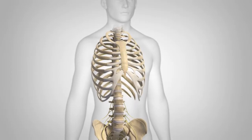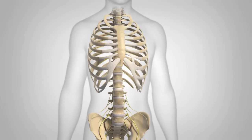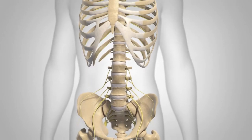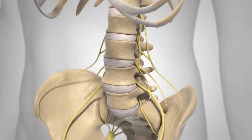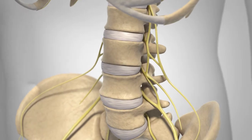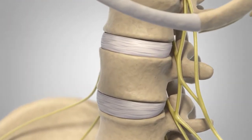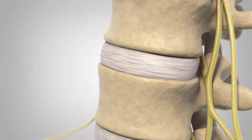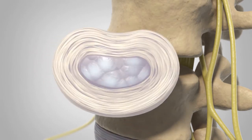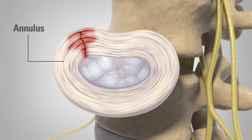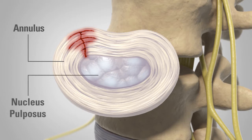Lumbar degenerative disc disease, or DDD, is defined simply as the wear and tear of intervertebral discs that act as cushions for the spine. This wear and tear may result from normal aging, or may be due to long-standing trauma. DDD typically begins with tears in the outer ring of the disc, or annulus, and can lead to a decrease in the water content of the soft gel center of the disc, or nucleus pulposus.